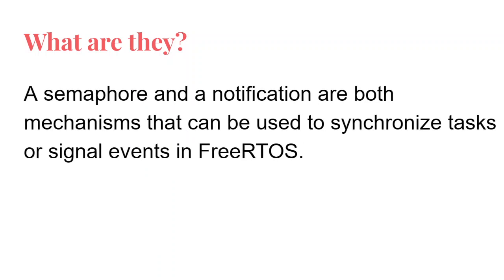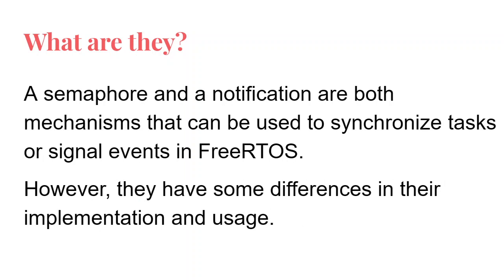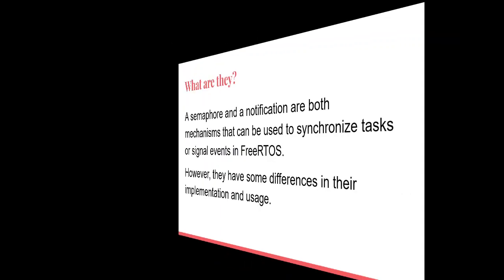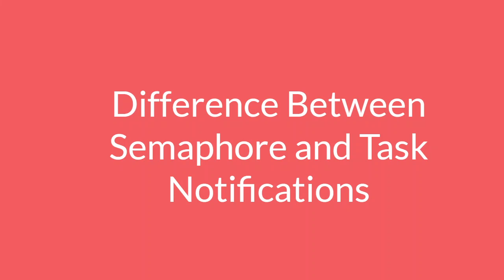First of all, what are they? A semaphore and a notification are both mechanisms that can be used to synchronize tasks. Whenever you are creating a task and you need to pass information or share a resource, you use them to implement various kinds of patterns. You need to let one task await for that resource to be available, or to receive a notification, just like we did in our previous video on task notification in the STM32 FreeRTOS series. They have some differences in their implementation and usage, and we are going to cover that differentiation so you know what to use and when to use.